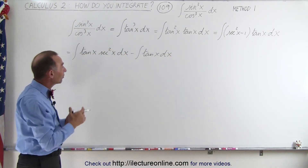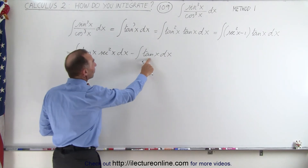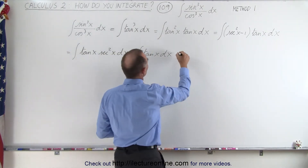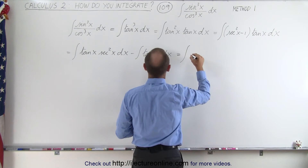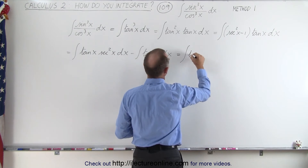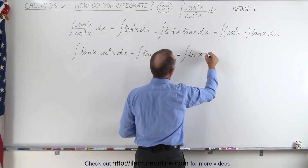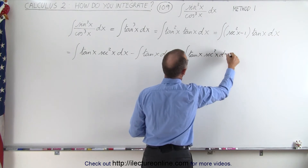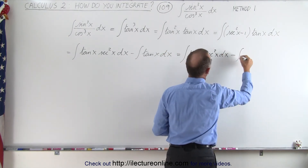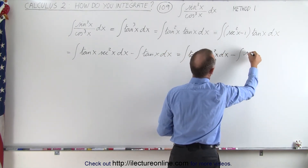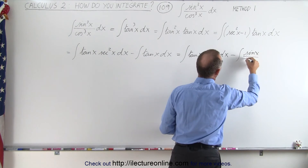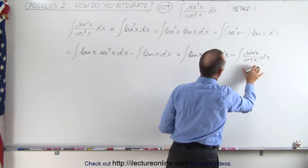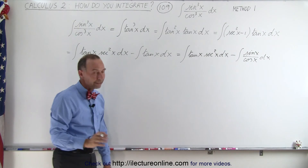To make the second integral a bit easier to integrate, we're going to replace tangent of x with sine over cosine of x. So this becomes the integral of tangent of x times secant squared of x dx, minus the integral of sine of x divided by cosine of x dx. That makes this one a little bit easier to integrate.